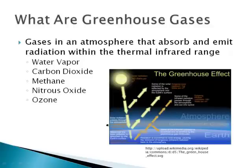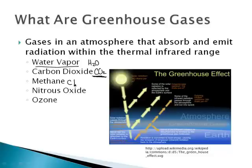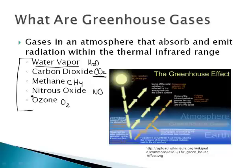What specifically are the greenhouse gases? Water vapor is one of them — just water — and this is the most important one. Carbon dioxide is the one that's garnered all the controversy. Methane, CH4. Nitrous oxide, NO. And then ozone, O3. These are the big ones. There are some other greenhouse gases, but these are the ones everyone talks about. These absorb and emit radiation within the thermal infrared range.